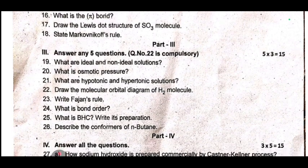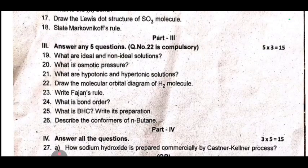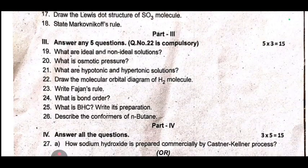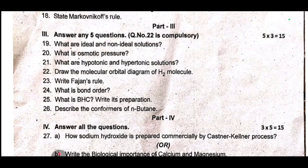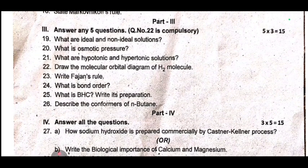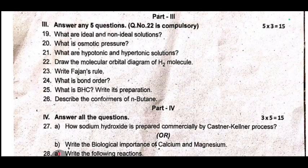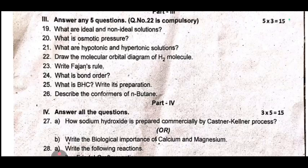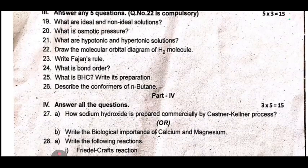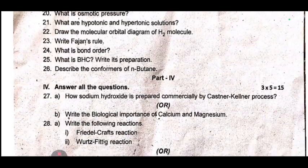Next is Part 4, 5 marks questions. Question 27: How is sodium hydroxide prepared commercially by Castner-Kellner process? Or write the biological importance of calcium and magnesium. This is the most important part from previous year.